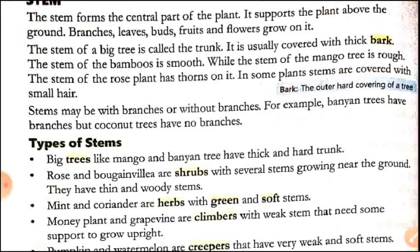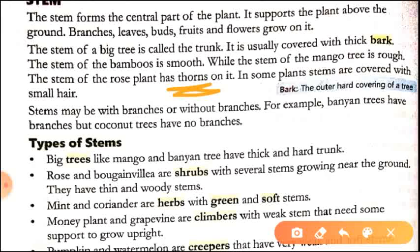The stem of the rose plant has thorns on it. If we talk about the stem of the rose plant, they have thorns on it. In some plants, the stems are covered with small hairs. If we touch such a stem, it feels very soft. Stems may be with branches or without branches.